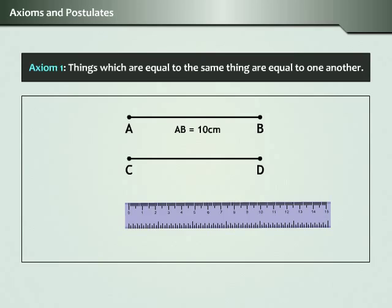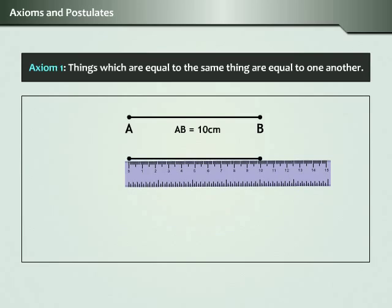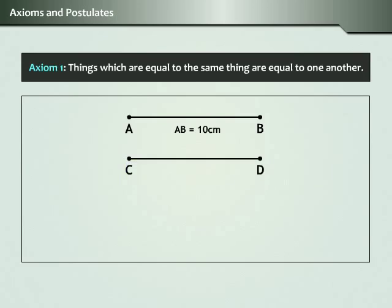Measure the length of line segment CD. Do you observe that line segment CD has the same length equal to 10 cm? You may write this as CD equals AB and AB equals 10 cm, which implies CD equals 10 cm.